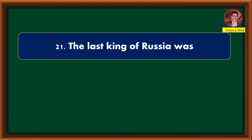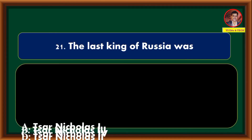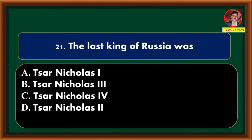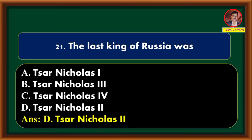The last king of Russia was — Tsar Nicholas 1st, Tsar Nicholas 3rd, Tsar Nicholas 4th, Tsar Nicholas 2nd. Correct answer is option D: Tsar Nicholas 2nd.